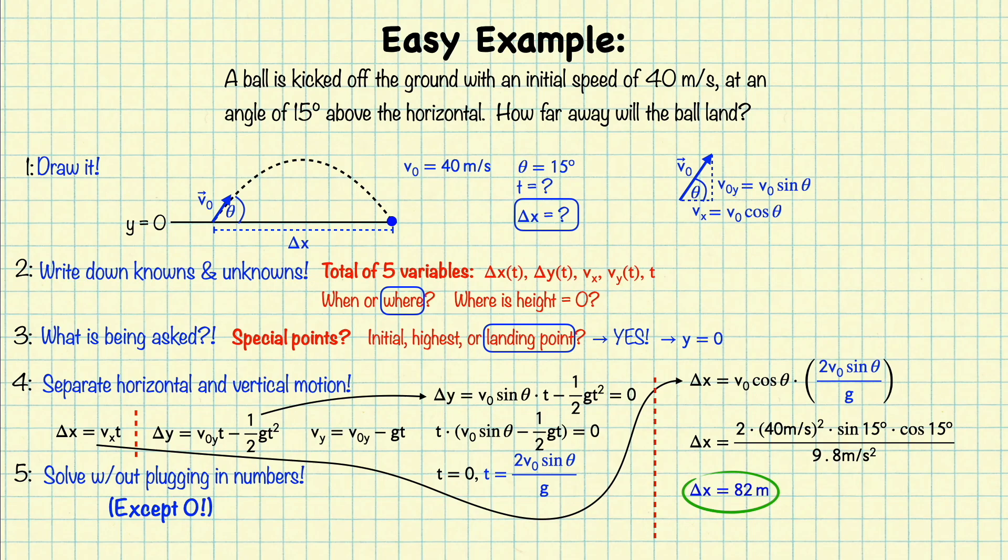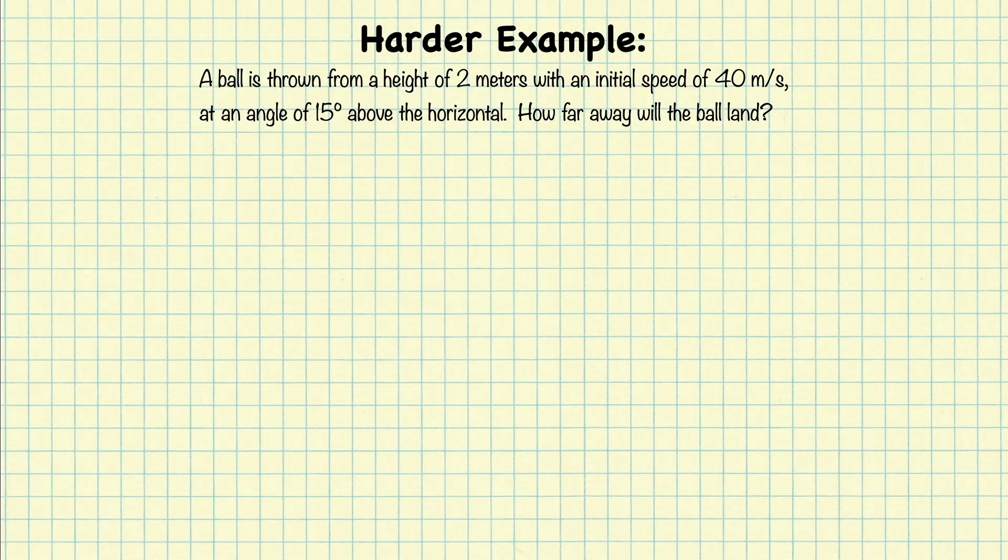Now this example is particularly easy because the initial point and the final point have the same height. In this case height equals zero. If the initial point and final point have different heights, then it gets a little bit more complicated, but it's still fairly simple. So now let's take a look at a range problem where the ball does not start on the ground.